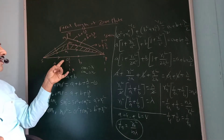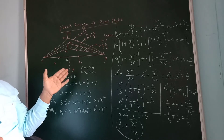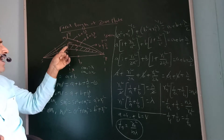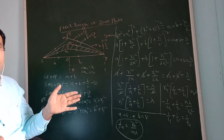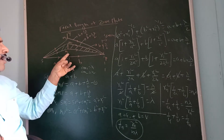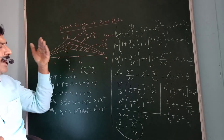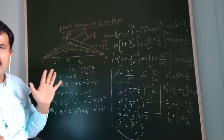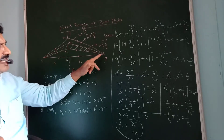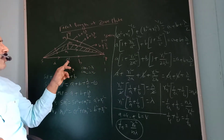Light from the source is incident on the zone plate as a divergent spherical wavefront. At the edges of the alternate zones, bending occurs — Fresnel diffraction takes place. Due to this Fresnel diffraction, a pattern is produced on the screen, and bright intensity is produced at point P on the screen, at distance B.